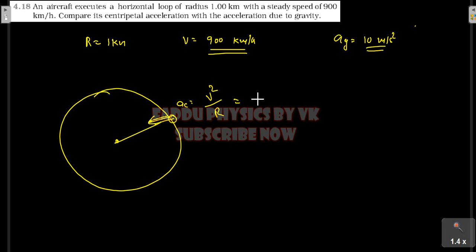See how much will happen. V square is 900 whole square divided by R, R is 1 km, so it will be 81 into 10 to the power 4.